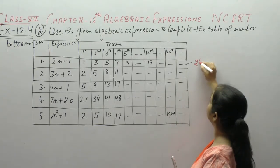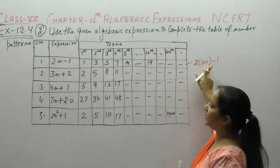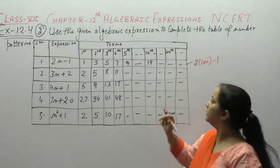100. 2 into 100 minus 1. क्या आया? 200 minus 1, 199.